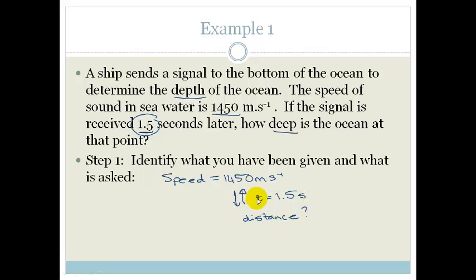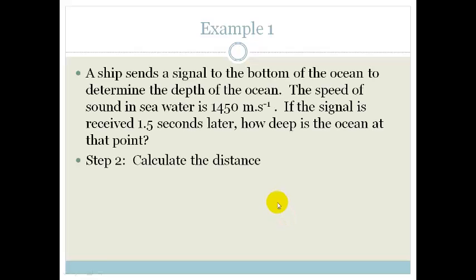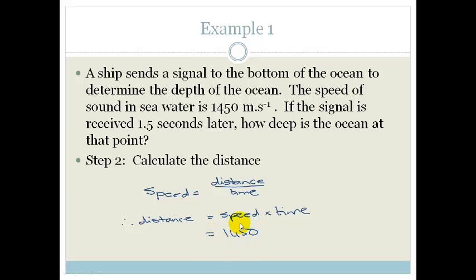Now that we've identified what we have and what we need, we can actually now calculate the distance. So, we know that speed equals distance divided by time. Therefore, we know that distance equals speed times time. So, we can take our 1,450, and we can times 1,450 times it by our 1.5 seconds. And we end up with a distance of 2,175 meters.